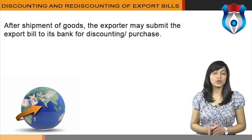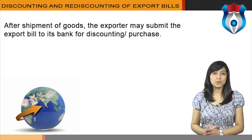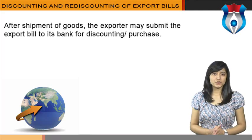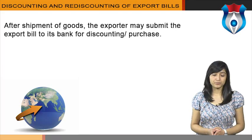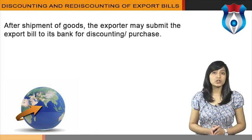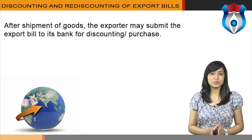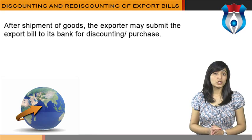Let's start with a brief introduction to discounting and rediscounting of export bills. After shipment of goods, the exporter may submit the export bill to its bank for discounting or purchase. This bill discounting facility may be a sub-limit to packing credit or may be a separate limit depending on the bank's sanctioning authority. In bill discounting, banks buy the export bills — that is, bill of exchange or promissory note — before it becomes due for payment. The transaction is practically an advance against the security of the bill.